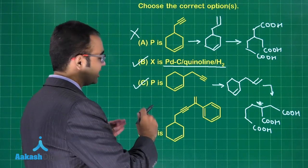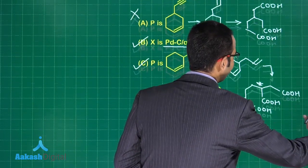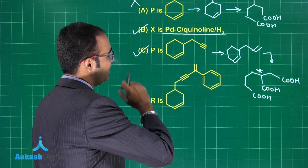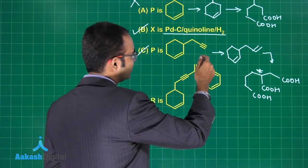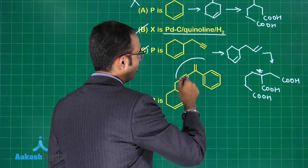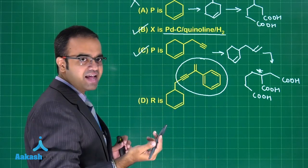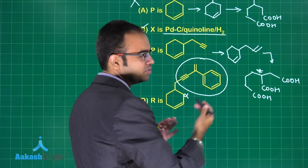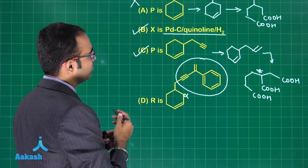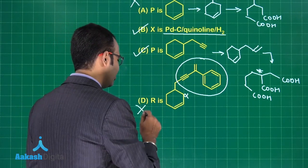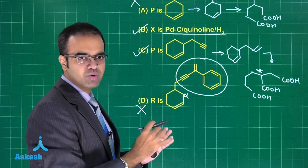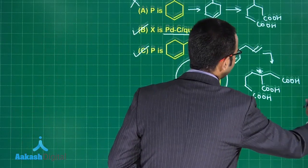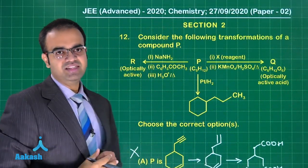Since option C is the correct structure, the substituent attached should be at the alpha position to the alkene. The structure given in option D places the attachment at the wrong position, so option D is wrong. The correct answer to question 12 is options B and C. Let us move on to question 13.